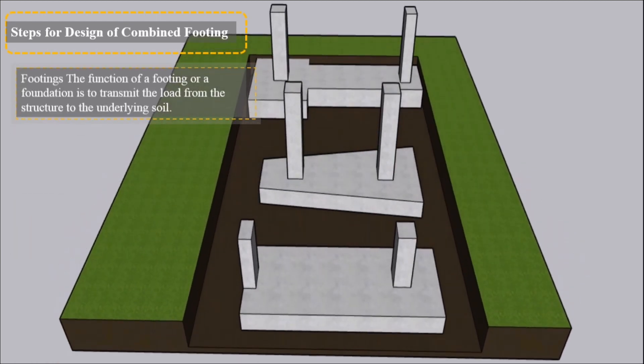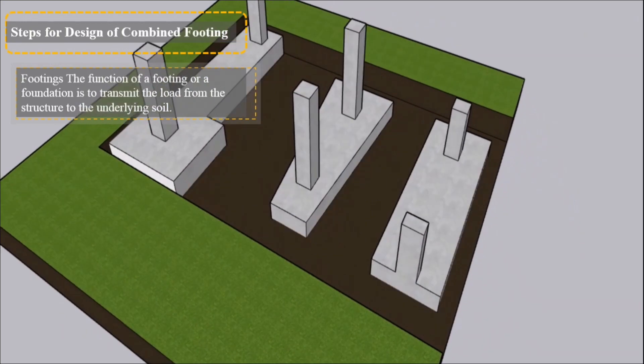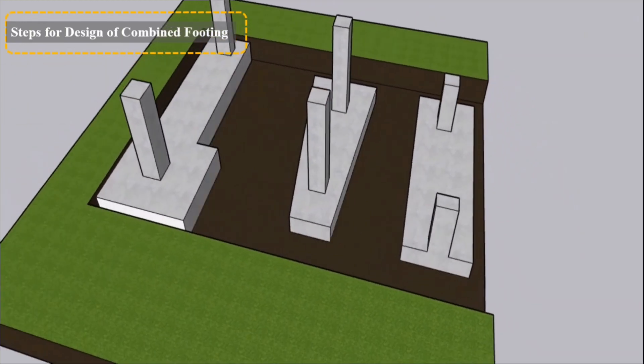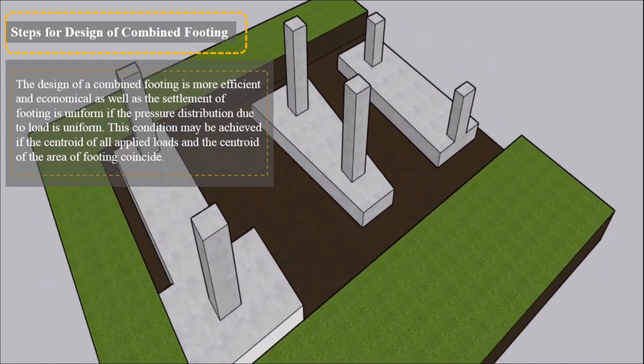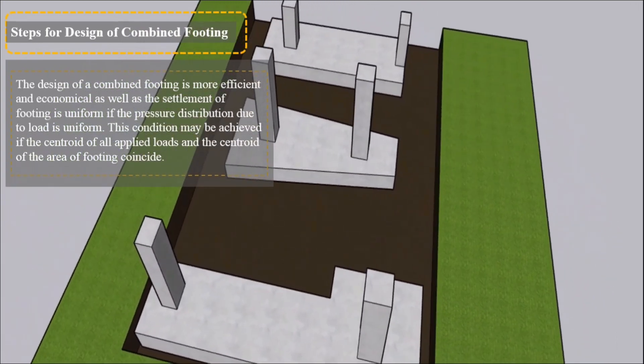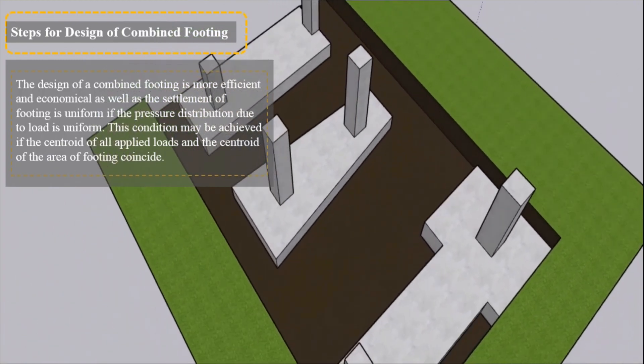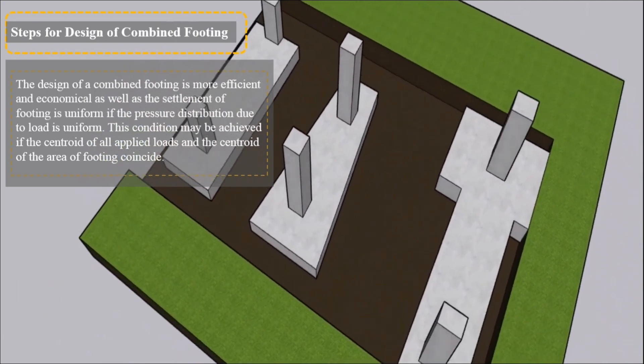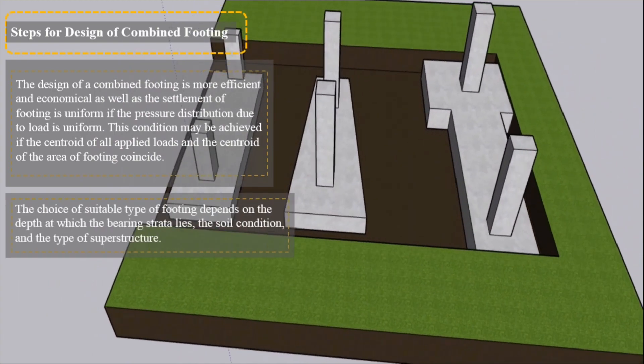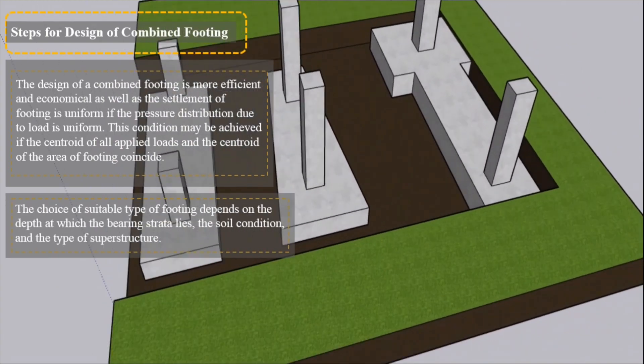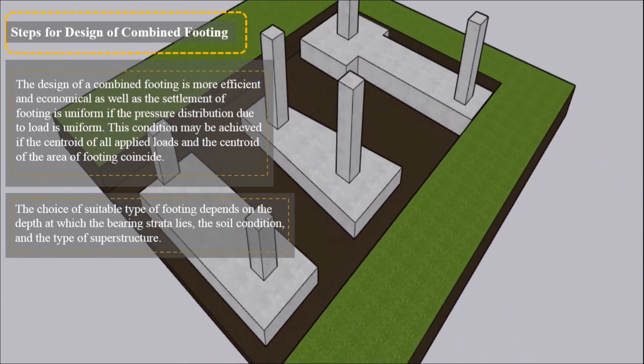Footings: The function of a footing or a foundation is to transmit the load from the structure to the underlying soil. The design of a combined footing is more efficient and economical as well as the settlement of footing is uniform if the pressure distribution due to load is uniform. This condition may be achieved if the centroid of all applied loads and the centroid of the area of footing coincide. The choice of suitable type of footing depends on the depth at which the bearing strata lies, the soil condition, and the type of superstructure.